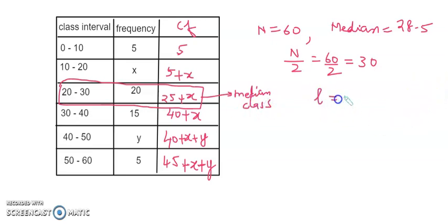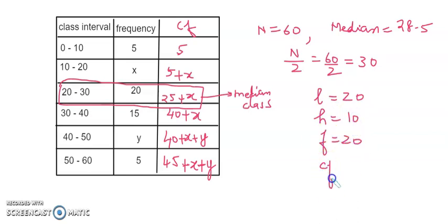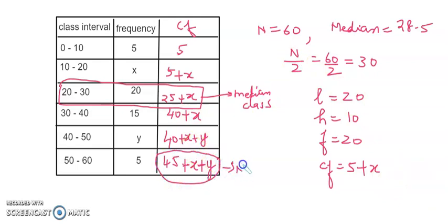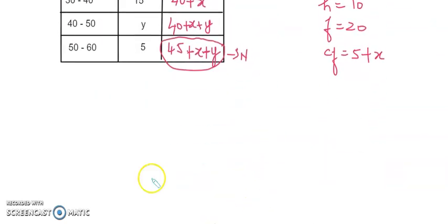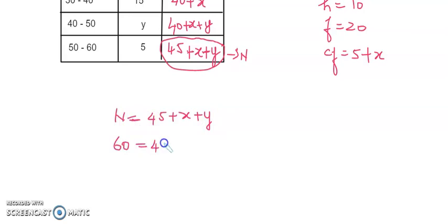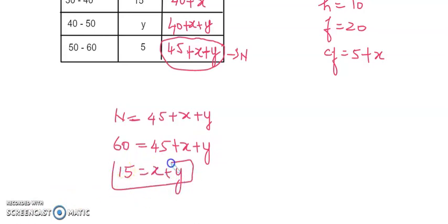The lower limit is 20, class length is 10, frequency is 20, and CF is 5 plus x. Using the total frequency: n equals 45 plus x plus y, and n is given as 60. So 60 equals 45 plus x plus y, giving x plus y equals 15. That is the first equation.